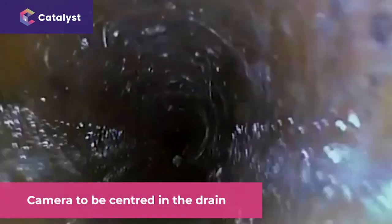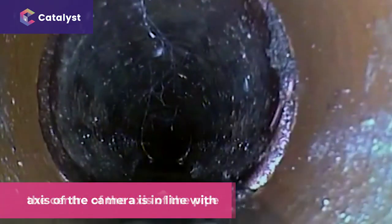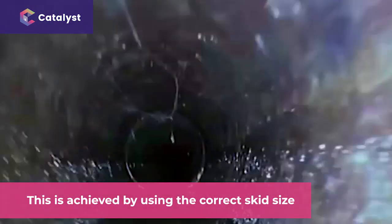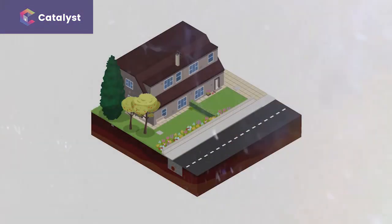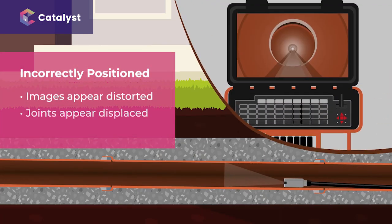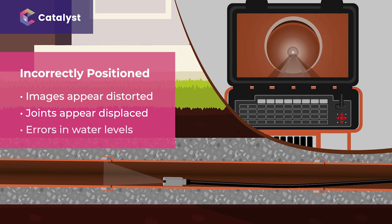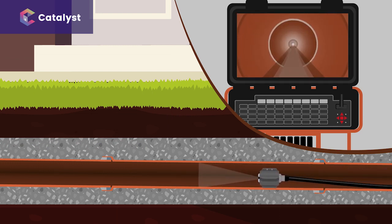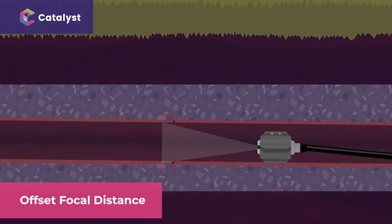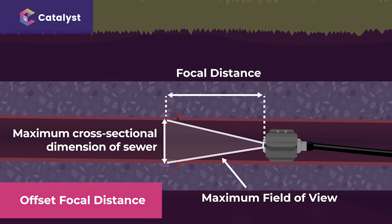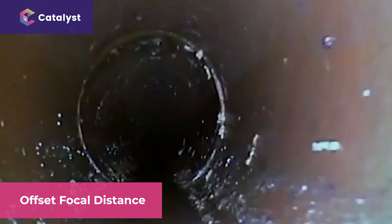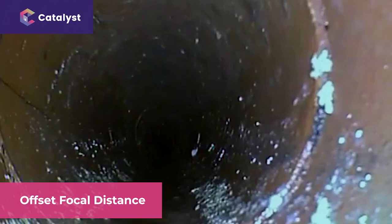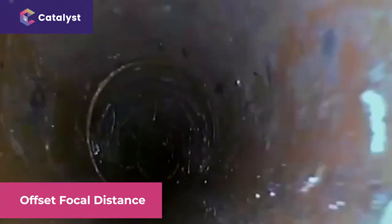It's very important for cameras to be centred in the drain. It means the axis of the camera is in line with the centre of the axis of the pipe. This is achieved by using the correct skid size for the pipe. If the camera is too high or too low, the images recorded can be distorted, making joints appear displaced when they're not, and resulting in errors in the estimation of water levels. This can happen, for instance, if a 100 millimetre skid is being used in a 150 millimetre drain. The offset focal distance also needs to be considered — in basic terms, the location you're seeing on the monitor screen is not the actual location of the camera. This matters when marking up for a liner or a patch repair that needs to cover a fault at a precise point such as a junction, rest bend, or patch liner repair.